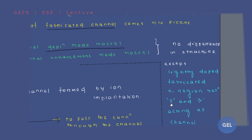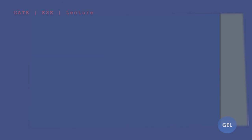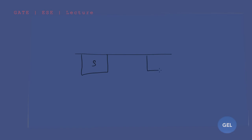What does that mean? Look carefully — your source is here and this is your drain. The region between them is the channel region, and that fabricated channel is what makes the depletion mode MOSFET work.